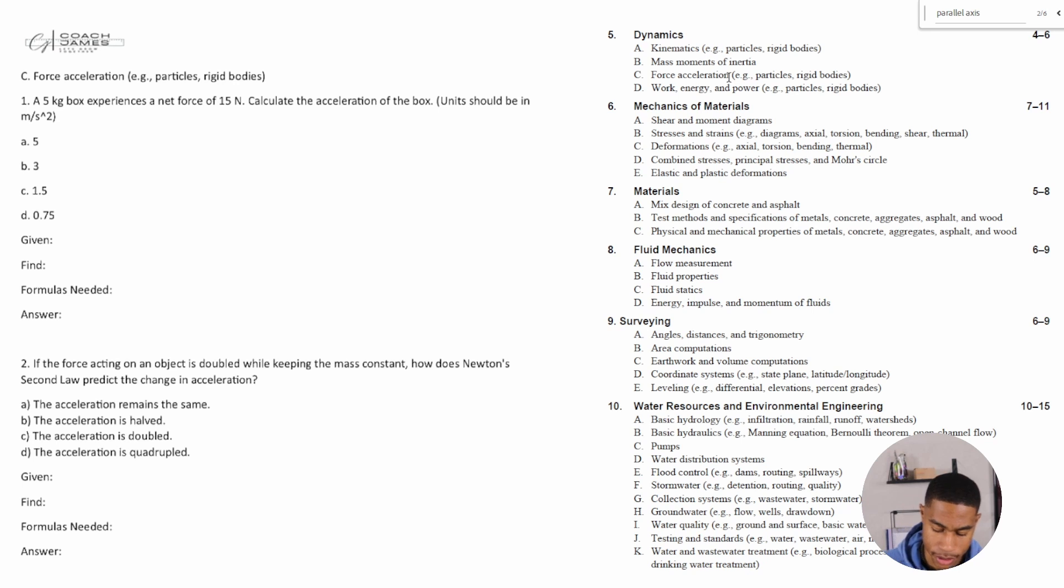Let's get into the practice problems. Number one says: A five kilogram box experiences a net force of 15 newtons. Calculate the acceleration of the box. Units should be in meters per second squared. Given: net force is 15 newtons, and they give us the mass of the box, which is 5 kilograms. Weight and mass are different - this is mass. We're trying to find the acceleration.